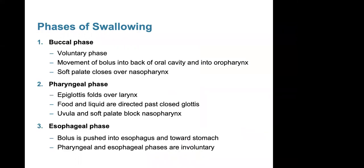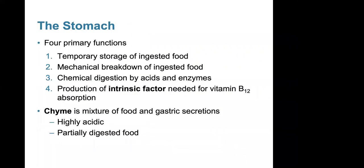To summarize the three swallowing phases: the buccal phase is voluntary — movement of the bolus to the oral pharynx with the soft palate closing off the nasopharynx. The pharyngeal phase involves the epiglottis folding over the larynx, food directed past the closed glottis, and the uvula and soft palate blocking the nasopharynx. The esophageal phase pushes the bolus into the esophagus toward the stomach. The pharyngeal and esophageal phases are involuntary.